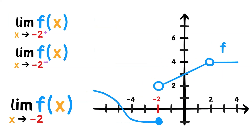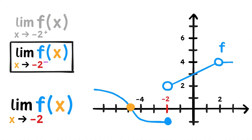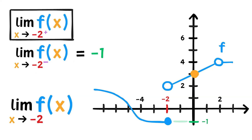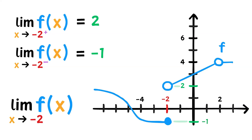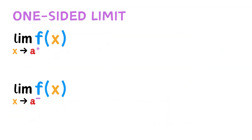Now, let's move over to negative 2. What is the limit of f of x as x approaches negative 2? Well, taking the limit from the left, as x approaches negative 2, f of x seems to approach negative 1. From the right, as x approaches negative 2, f of x approaches 2. The one-sided limits do not agree, thus the limit does not exist. For a limit to exist, the one-sided limits must exist and be the same.